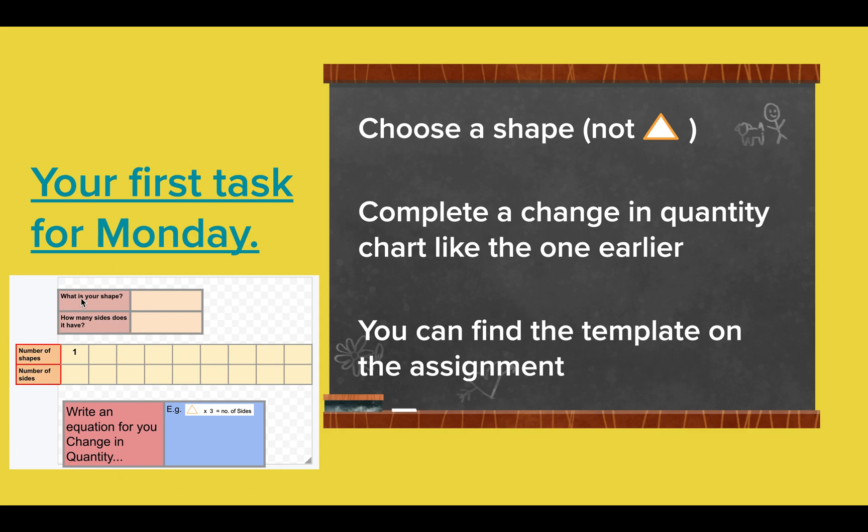You're going to fill this in. I'll give you a quick tour. It says, what is your shape? You're going to write your shape here and how many sides it has. Then you're going to use this chart to map your changes in quantity. I've done one for you. You can go up. You don't have to go 1, 2, 3, 4, 5, 6, 7, 8. If you want, you go 1, 3, 5, 7. You could put any quantities in there you want because the formula that you're going to find is going to help you find the quantities or the number of sides in your shape. Below, you need to write an equation for your change in quantity, for the work you've done. If you're struggling, just watch this video again and you'll easily be able to find your equation.